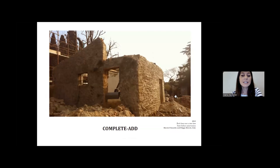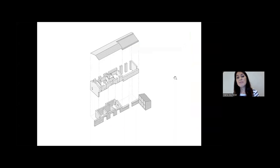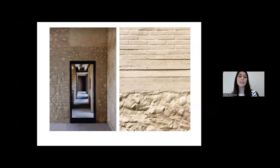The second strategy is called 'complete and add' and consists in adding a new shape or form to complete the original current state of a building. The first project is 'Brick House over a Stone Bar' by Bricolo Falsarella and Filippo Bricolo from Italy. The project wanted to turn the annexes of Villa Saccomini near Verona, which were used as a storehouse, into a house. The annexes were seen as areas of low architectural value due to a previous intervention with concrete block walls on top of the original. The architect demolished the previous intervention, returned the building to its original form, and then built a new extension with bricks, preserving the aesthetic of the original state.